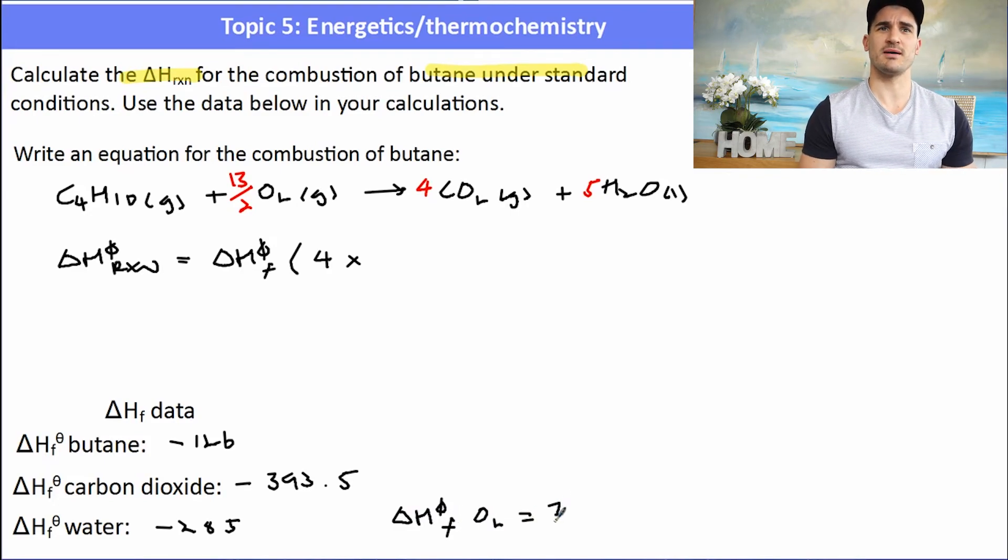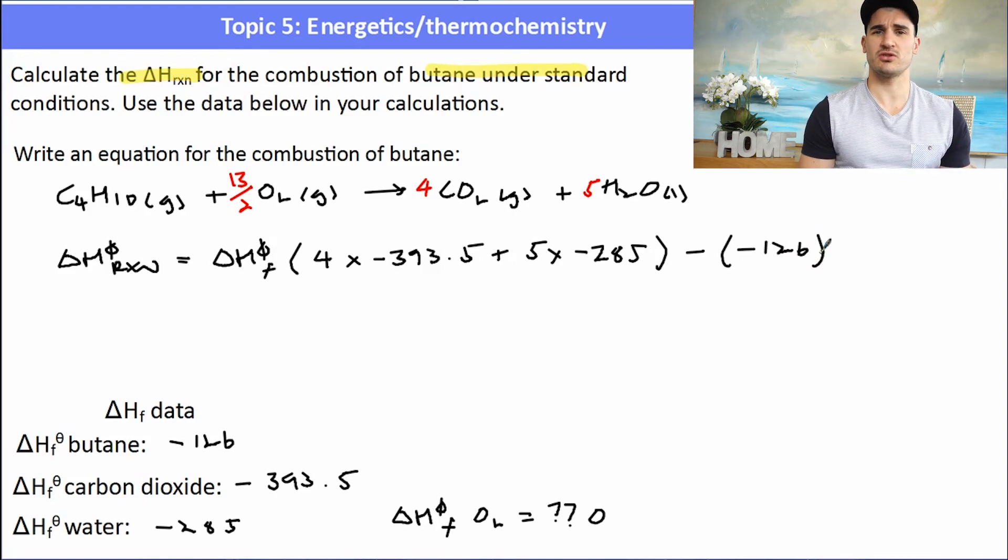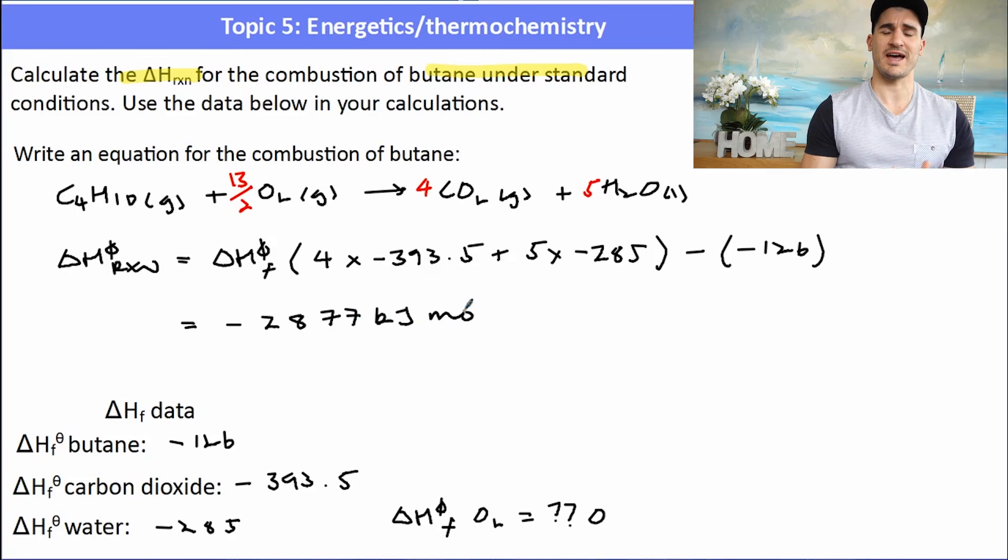So now if we plug in the numbers, we've got four times carbon dioxide plus five times water. We then take that away from the delta H of formation of the reactants, which in this case will be butane minus 126 plus zero. So let's just take away 126. Keeping all those numbers in your calculator, doing the addition in one step, we can work out the delta H of reaction of minus 2888 kilojoules per mole. That's not the thermochemical equation. The thermochemical equation wouldn't have halves in it.